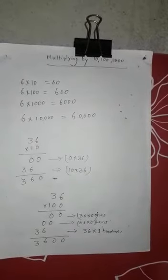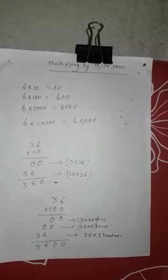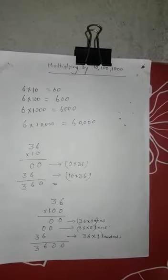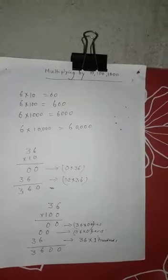If we have to multiply by 10, put 1 zero on the right of the given number. If 100, put 2 zeros on the right of the given number. If 1000, put 3 zeros on the right of the given number.